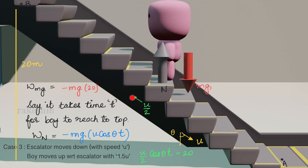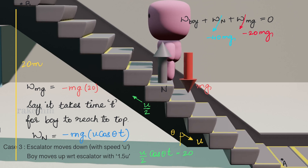Since the boy moves up with speed u/2, the vertical component (u/2)cosθ × t = 20 (the vertical displacement). From the work-energy theorem, total work done = 0 since the boy's speed does not change. Work done by mg is -20mg. For work done by N: since (u/2)cosθ × t = 20, we get u cosθ × t = 40, so work done by N = -mg × 40 = -40mg.